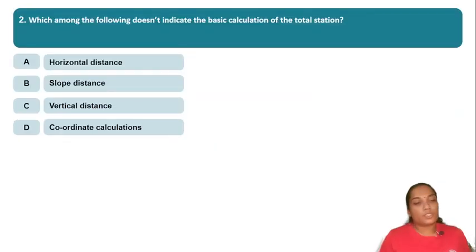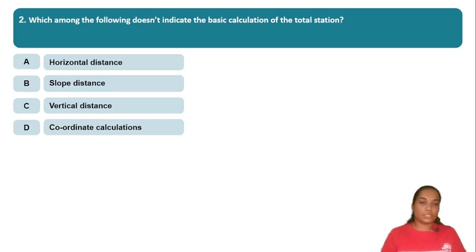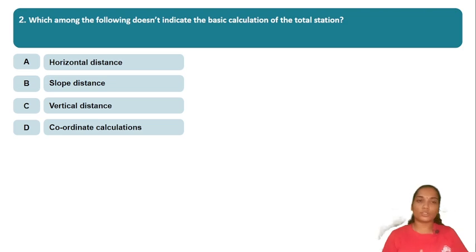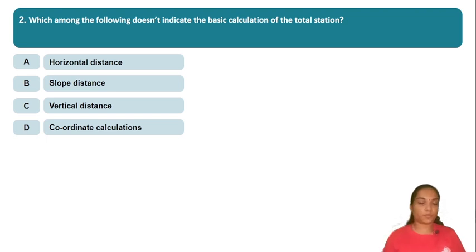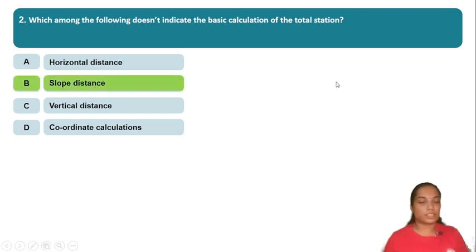Which of the following doesn't indicate a basic calculation of total station? The basic calculations for total station include horizontal distance, slope distance, vertical distance, and coordinate calculations. The answer is slope distance — it is not a basic calculation output.